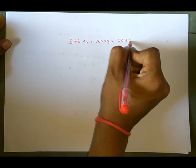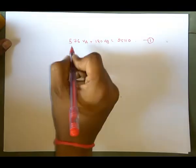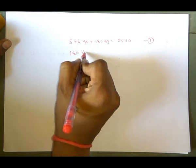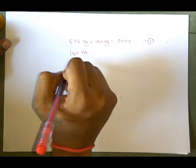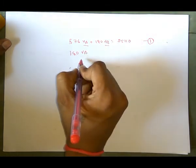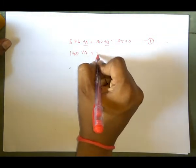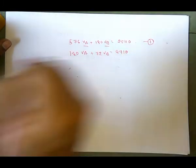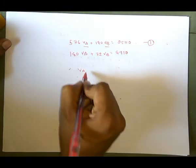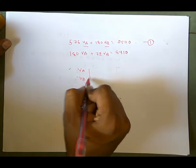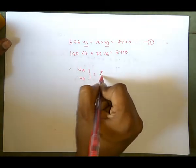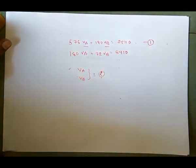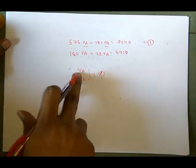We have two unknowns, VA and VB, so we must have two equations. My second equation is: VA plus 72·VB equals 8910. Now I have to find the values of VA and VB. These two are my unknowns, and we can find them with the help of the calculator.